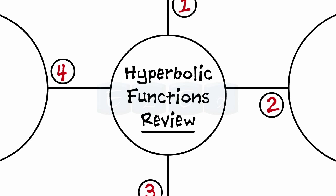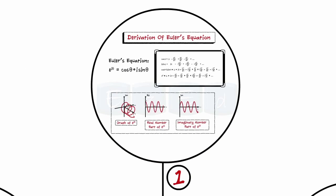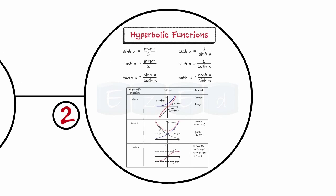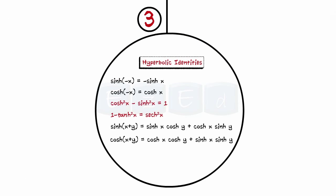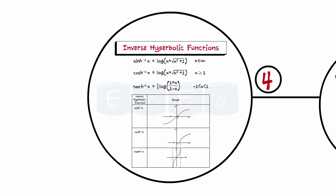Let's have a quick review of what we studied in this lecture. We studied the derivation of Euler's equation, then moved on to hyperbolic functions and their graphs, followed by hyperbolic identities. Finally, we understood the inverse hyperbolic functions and their graphs.